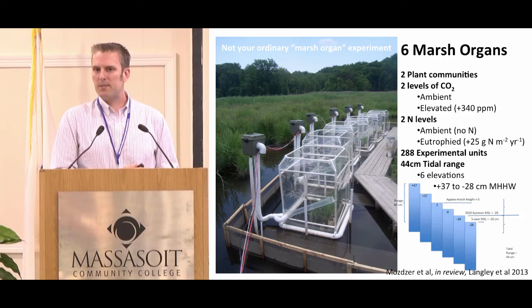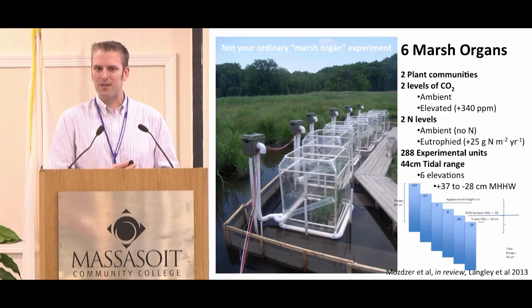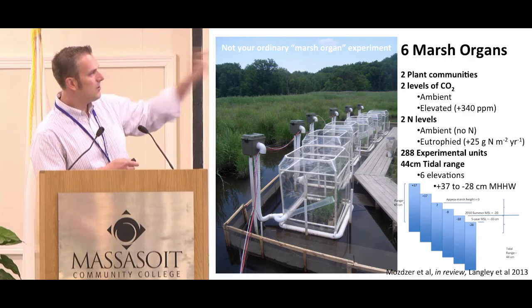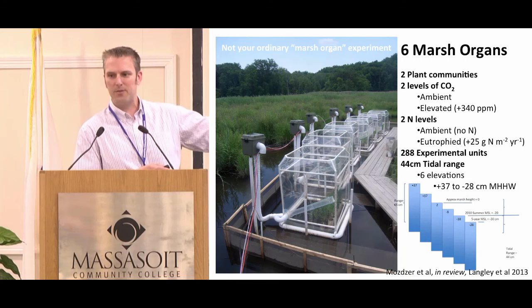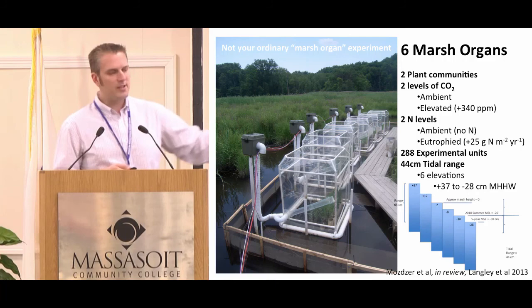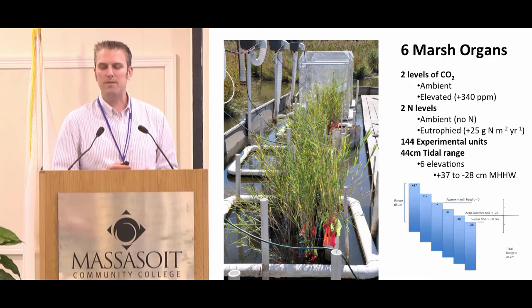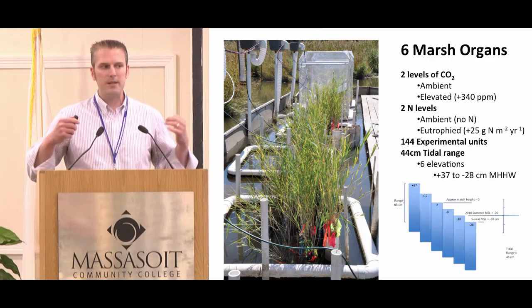Kathy introduced the marsh organ experiment and I want to discuss some key findings. At SERC we like to make things really complicated and interactive. We had two plant communities, two levels of CO2 (ambient and year-2100 projections), two levels of nitrogen (ambient and 25 grams of nitrogen per meter squared per year), and we were in Chesapeake Bay with a microtidal range of around 44 centimeters, looking at how plant growth changes as a function of CO2, nitrogen, and relative sea level rise.